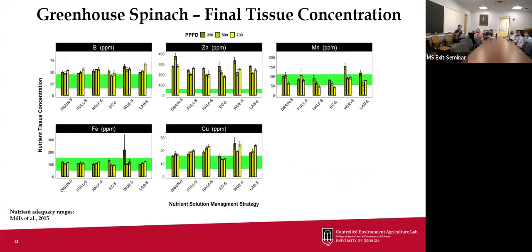One large difference for spinach was that iron didn't go much higher than the sufficiency range, but copper and particularly zinc tended to hyperaccumulate — nearly three times above the sufficiency range for zinc. As expected, there are differences between crops and cultivars, so it's never a one-size-fits-all approach for nutrient composition across different species.